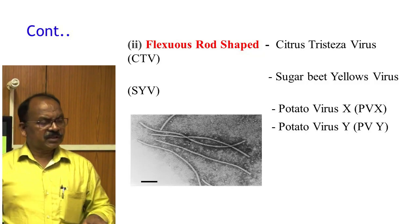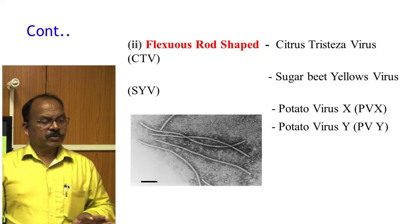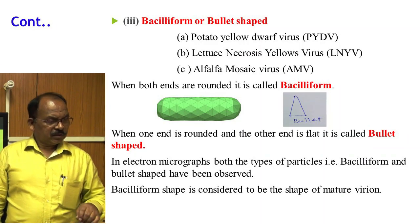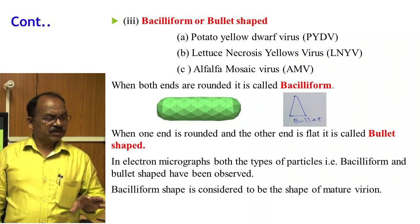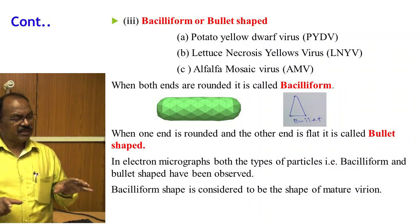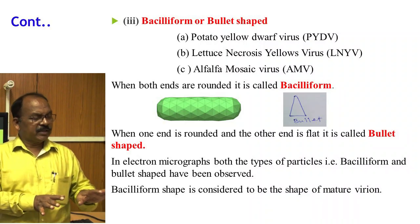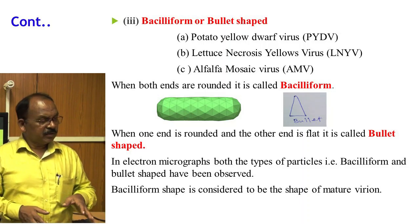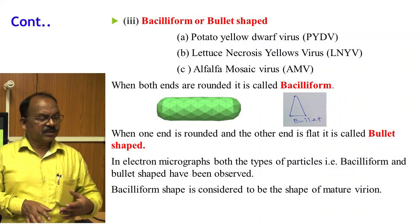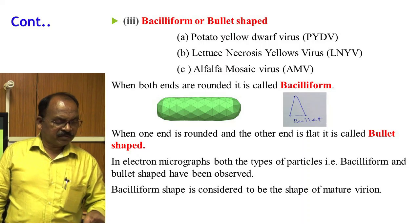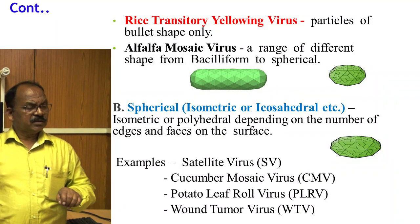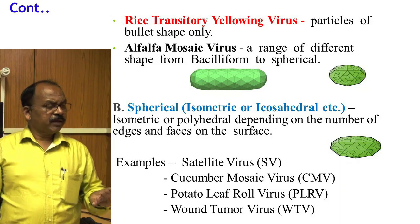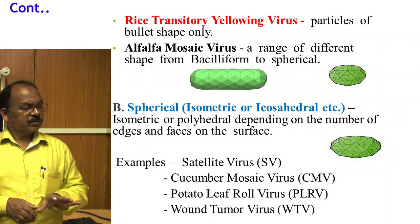Bacilliform or bullet-shaped viruses include Potato Yellow Dwarf Virus, Lettuce Necrotic Yellows Virus, and Alfalfa Mosaic Virus. When both ends are rounded, it is called bacilliform; when one end is rounded and the other is flat, it is called bullet-shaped. In electron micrographs, both types have been observed. Bacilliform is considered the shape of the mature virion — meaning a complete virus particle. Rice Transitory Yellowing Virus has particles of bullet shape only. Alfalfa Mosaic Virus has a range of different shapes from bacilliform to spherical.